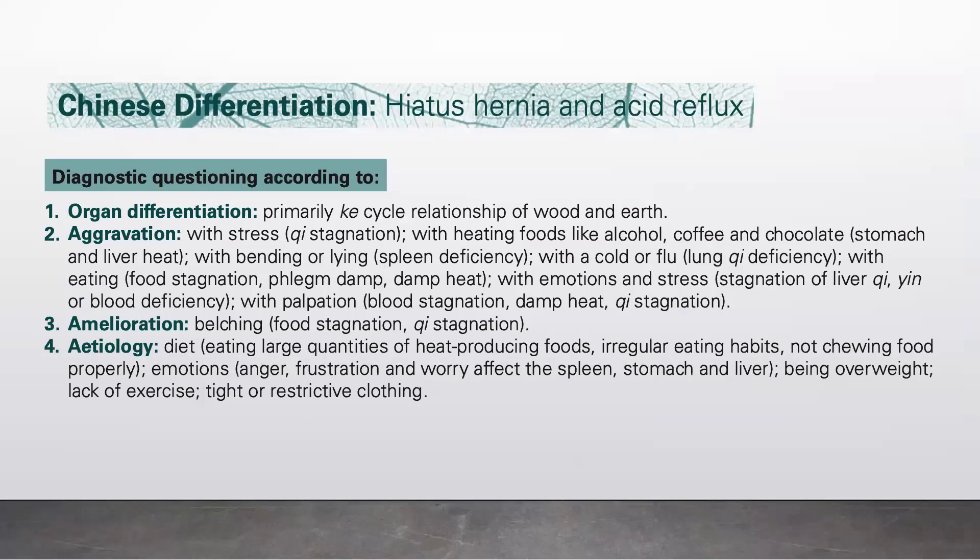Etiology: diet includes eating large quantities of heat-producing foods, irregular eating habits, and not chewing food properly. Emotions like anger, frustration, and worry affect the spleen, stomach, and liver, thus resulting in acid reflux. Being overweight will easily bring about hiatus hernia, as will lack of exercise and tight or restrictive clothing.